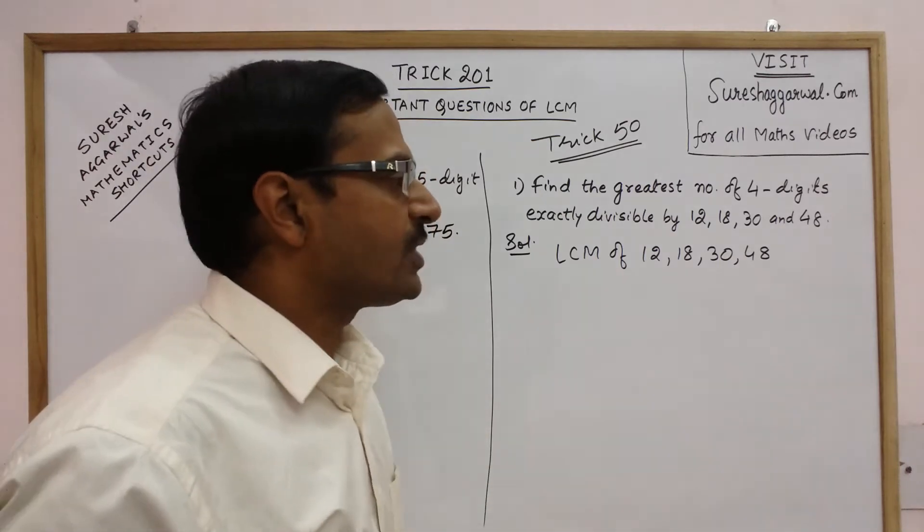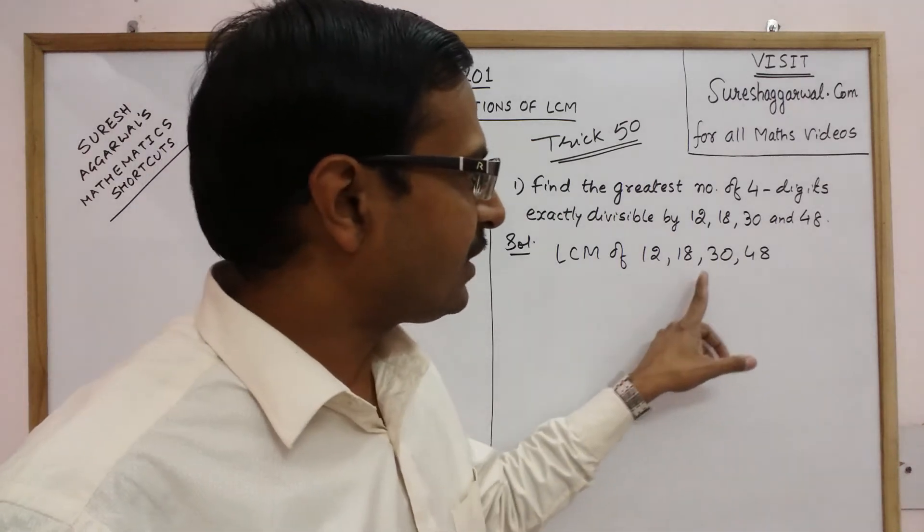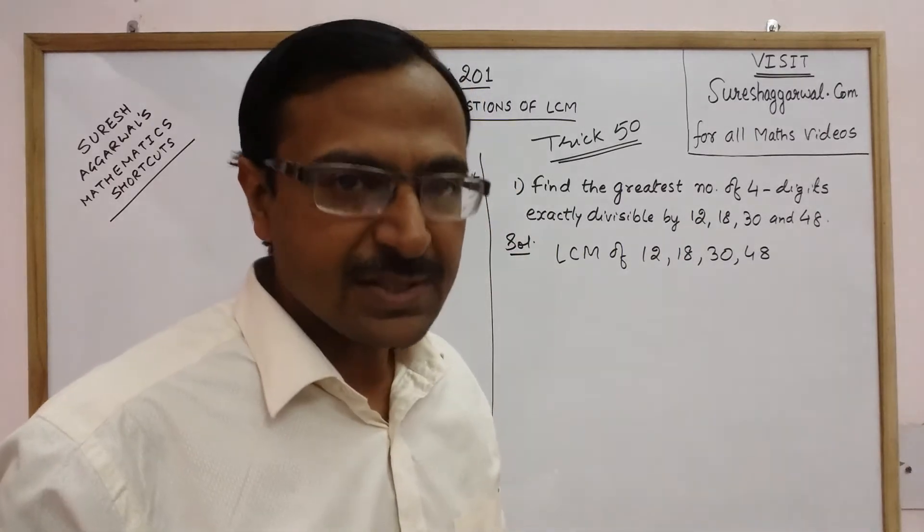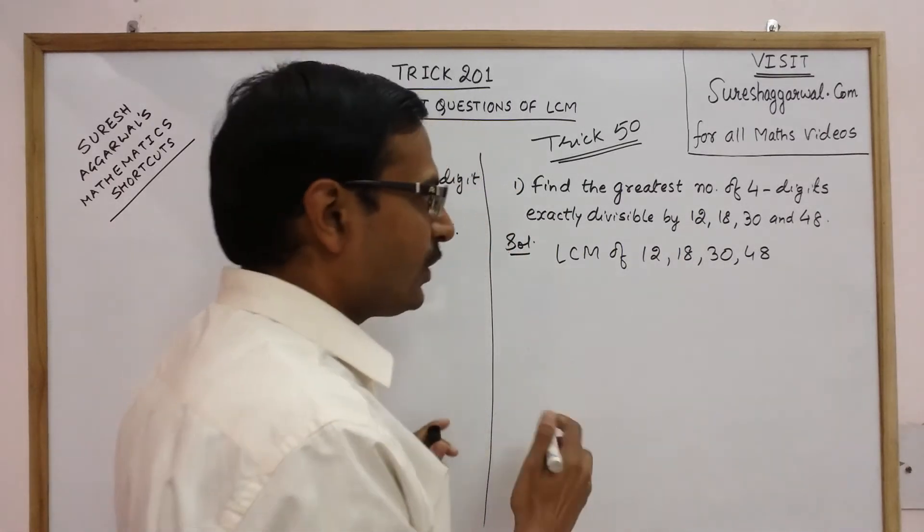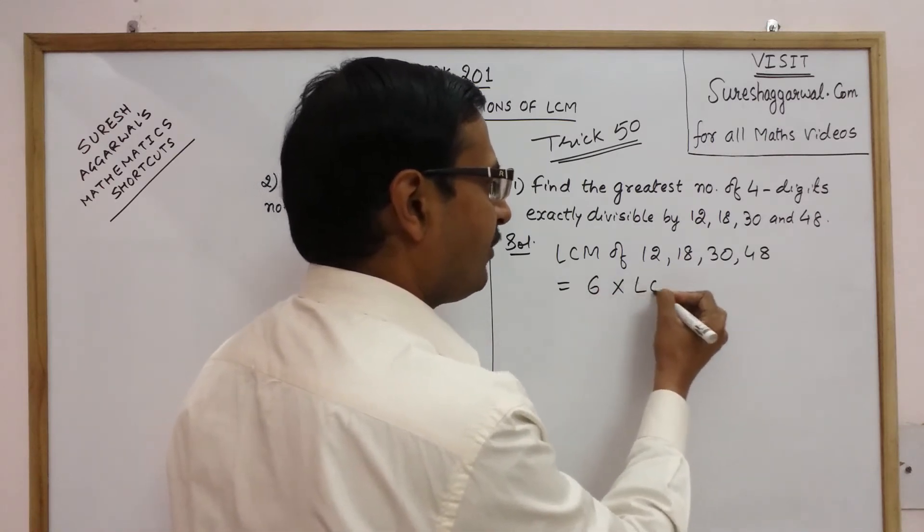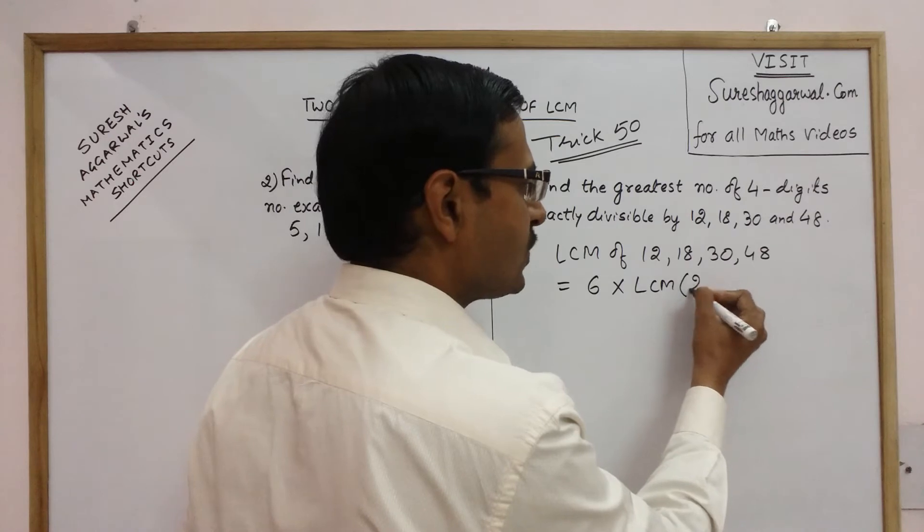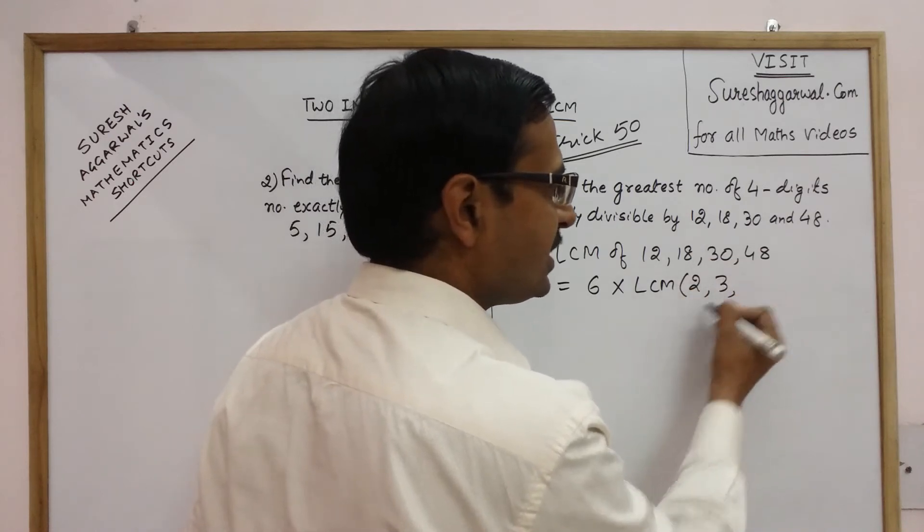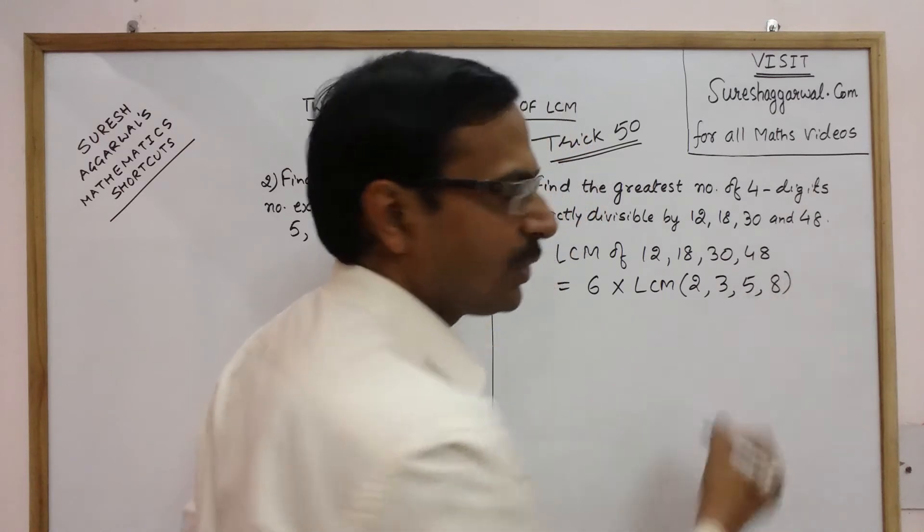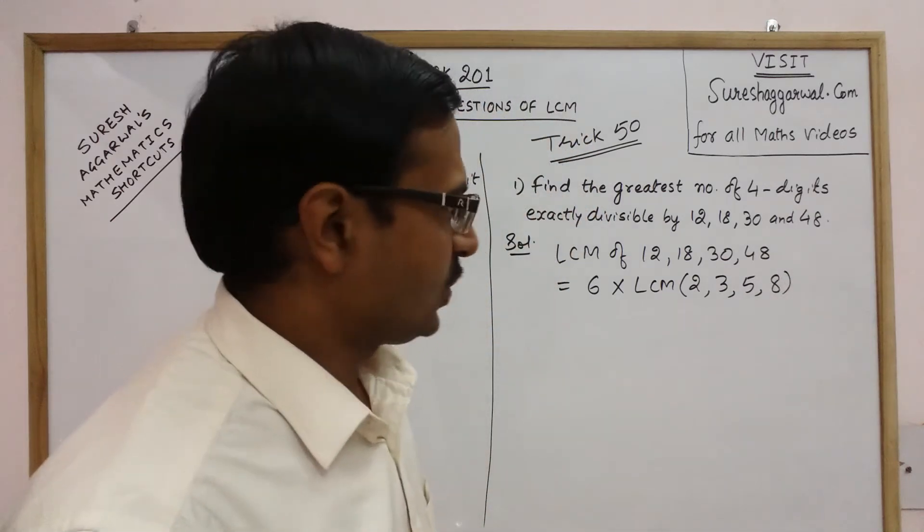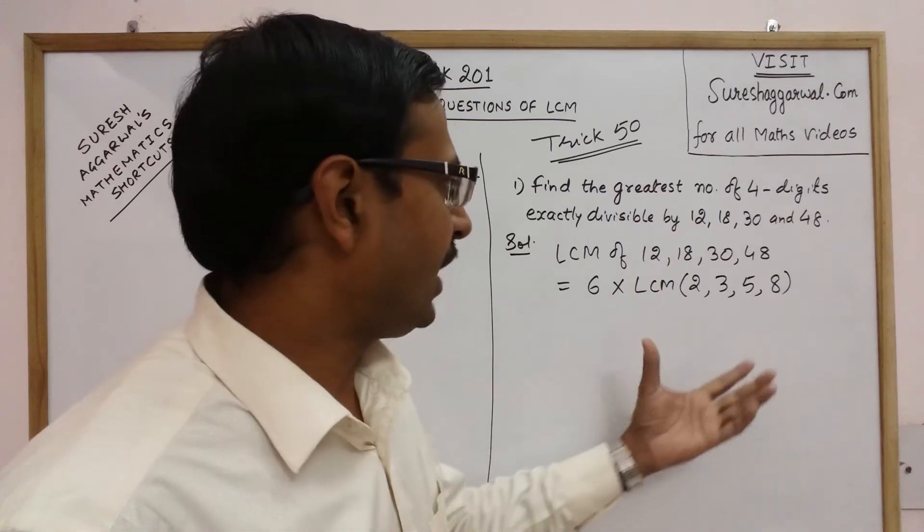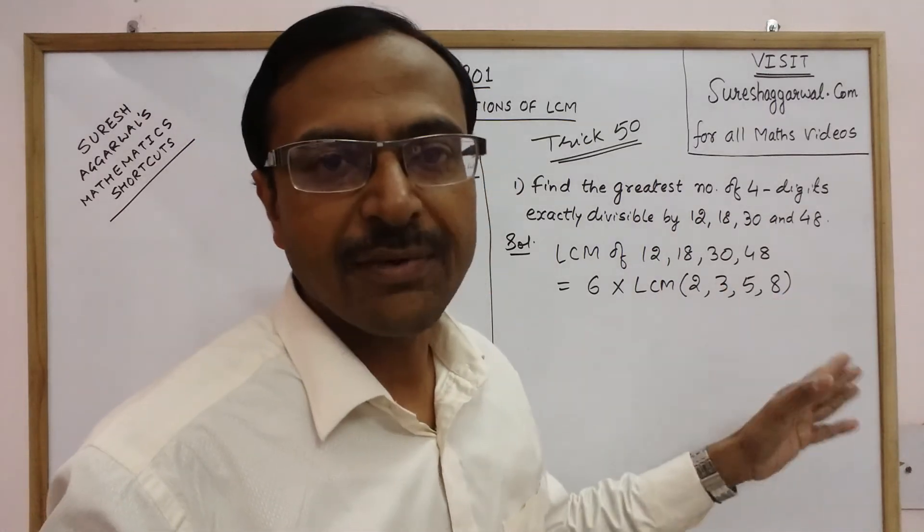Now here you can observe that 12, 18, 30 and 48 all are exactly divisible by 6. So what we do is we take this 6 common and we are left with 6×2 is 12, 6×3 is 18, 6×5 is 30 and 6×8 is 48. So now we have 6 as one part of the LCM and we need to find the LCM of 2, 3, 5 and 8 now.